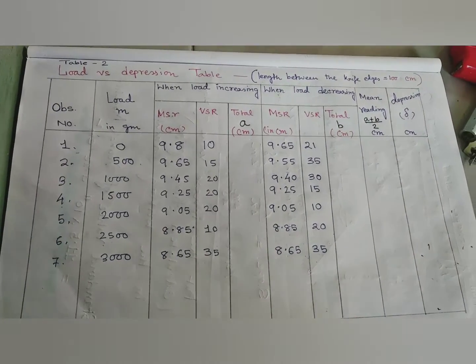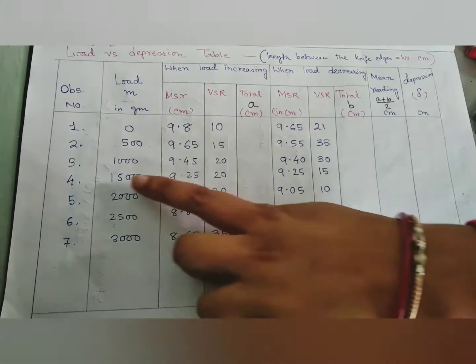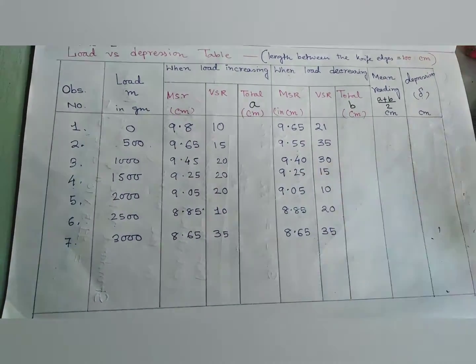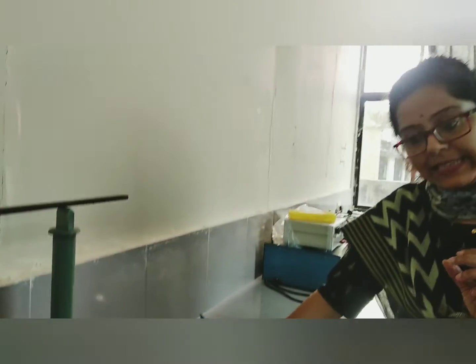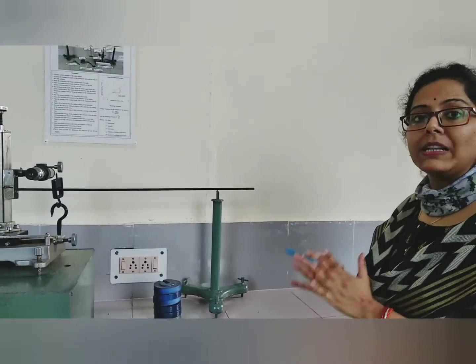At the same load, the reading during loading and unloading may differ slightly — for example, at 1000 grams it might be 9.45 loading and 9.40 unloading, while at 1500 grams both may be 9.25. If both readings are the same, that is ideal. A slight difference is also acceptable. But if you find a bigger difference between loading and unloading readings, there must be some error and you need to redo the experiment. Also note that for the last load (3000 grams), the loading and unloading readings will always be the same, because as soon as we release one weight, it drops from 3000 to 2500 grams — so the last reading remains the same regardless.